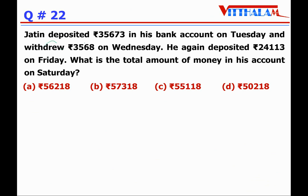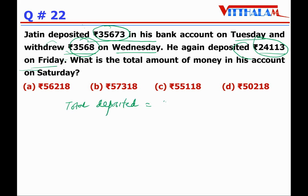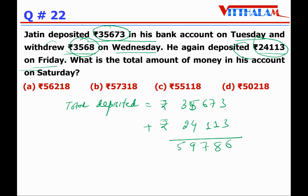Question 22: Jatin deposited ₹35,673 in his bank account on Tuesday and withdrew ₹3,568 on Wednesday. He again deposited ₹24,113 on Friday. What is the total amount of money in his account on Saturday? Total amount deposited is ₹35,673 plus ₹24,113. Adding: 3+3=6, 7+1=8, 6+1=7, 5+4=9, 3+2=5 — so ₹59,786 is deposited.